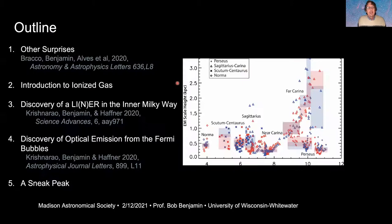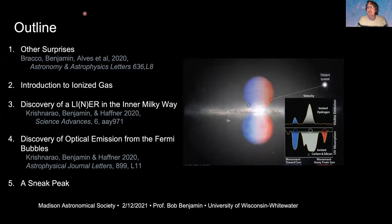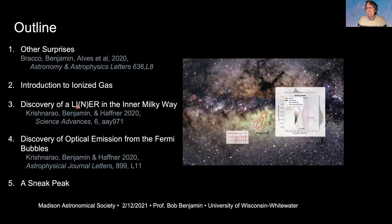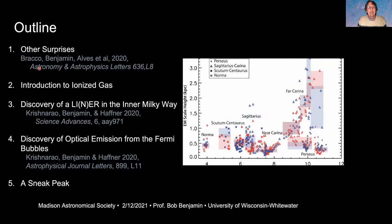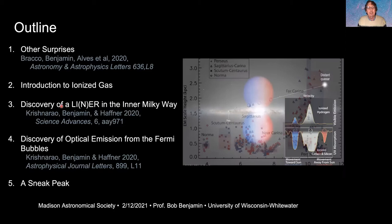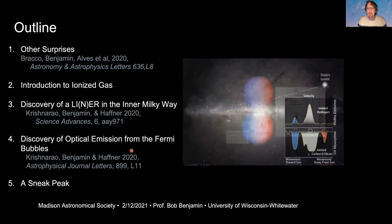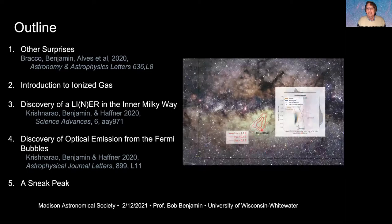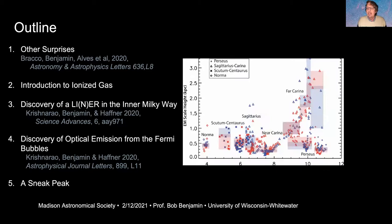I'm an 'eat your dessert first' kind of guy, so I'll put the surprises first and then go back to the mysterious Milky Way field. I'll talk about other surprises, then more about ionized gas, then the discovery of what's called a LINER in the inner Milky Way, and then the discovery of optical emission from a structure in the center of the Milky Way galaxy — the so-called Fermi Bubble, seen in gamma rays, which we think we've detected in ionized gas as well.